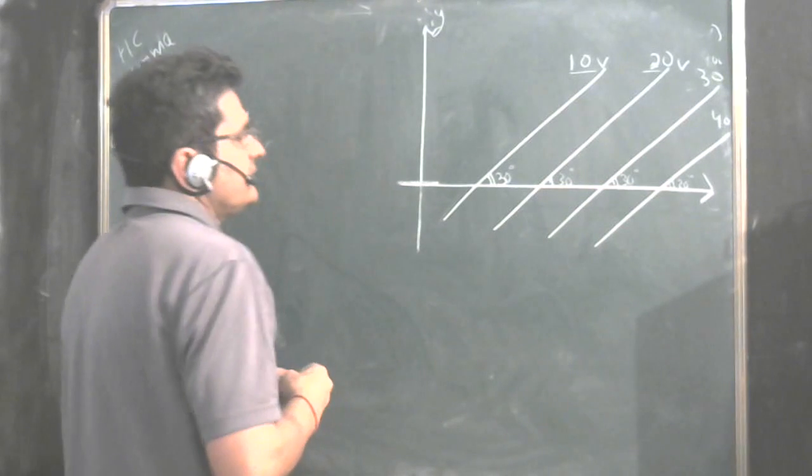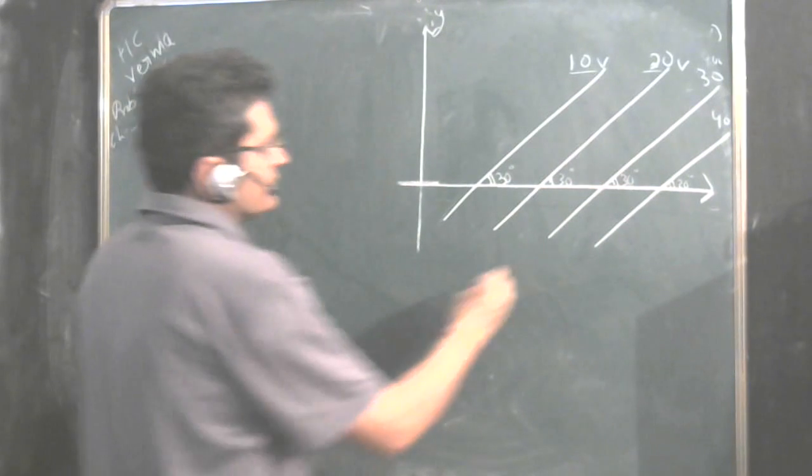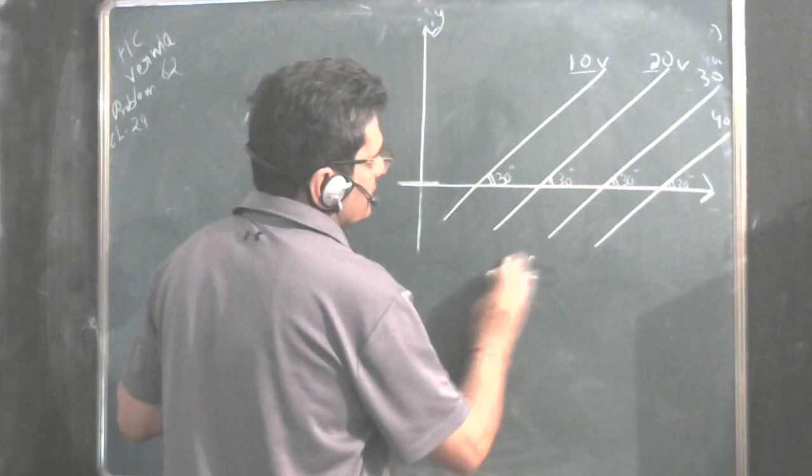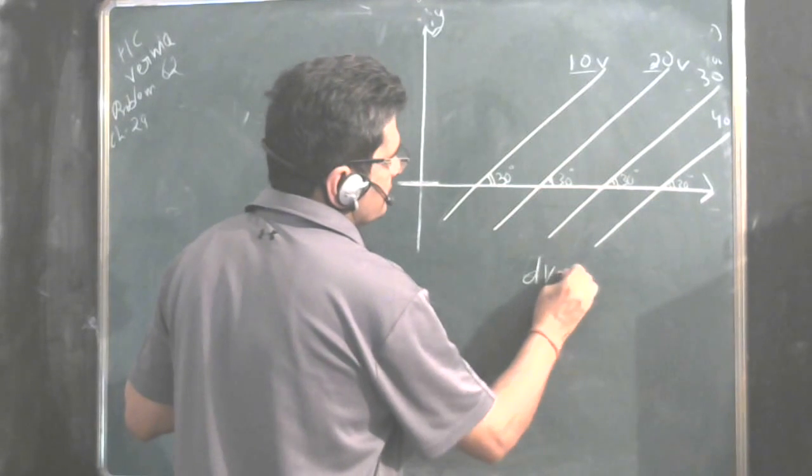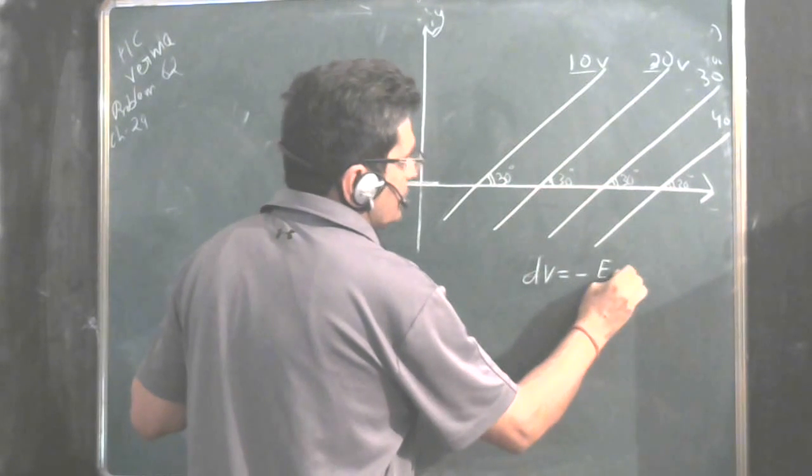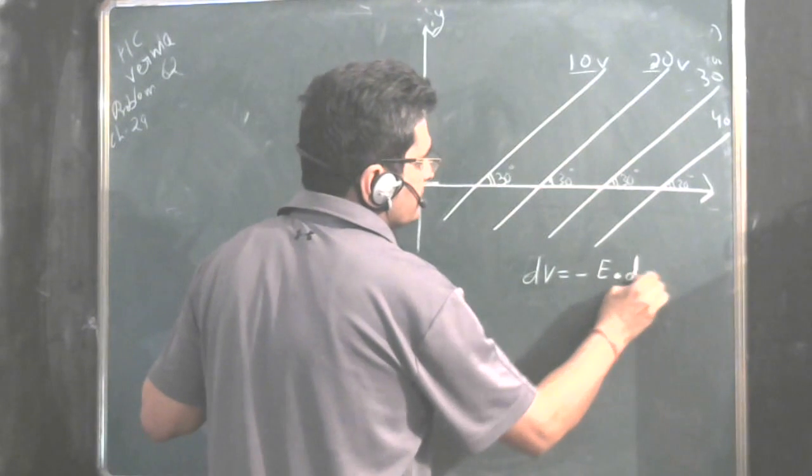We have to find the magnitude and direction of electric field. Now use this formula: dV is equal to minus E dot dR. Please remember it is the dot product.